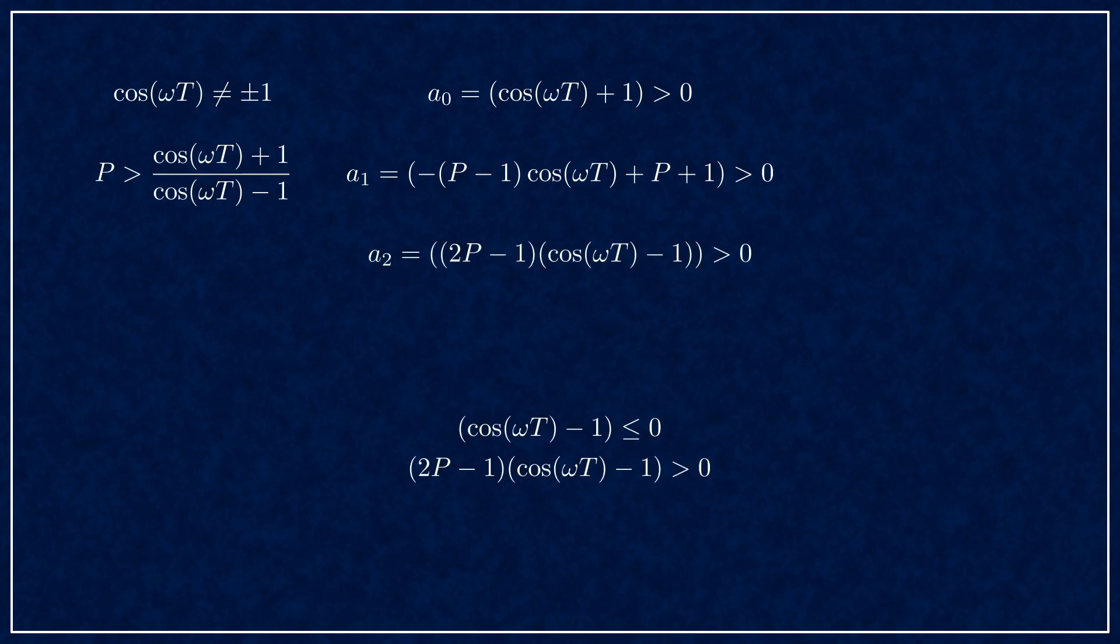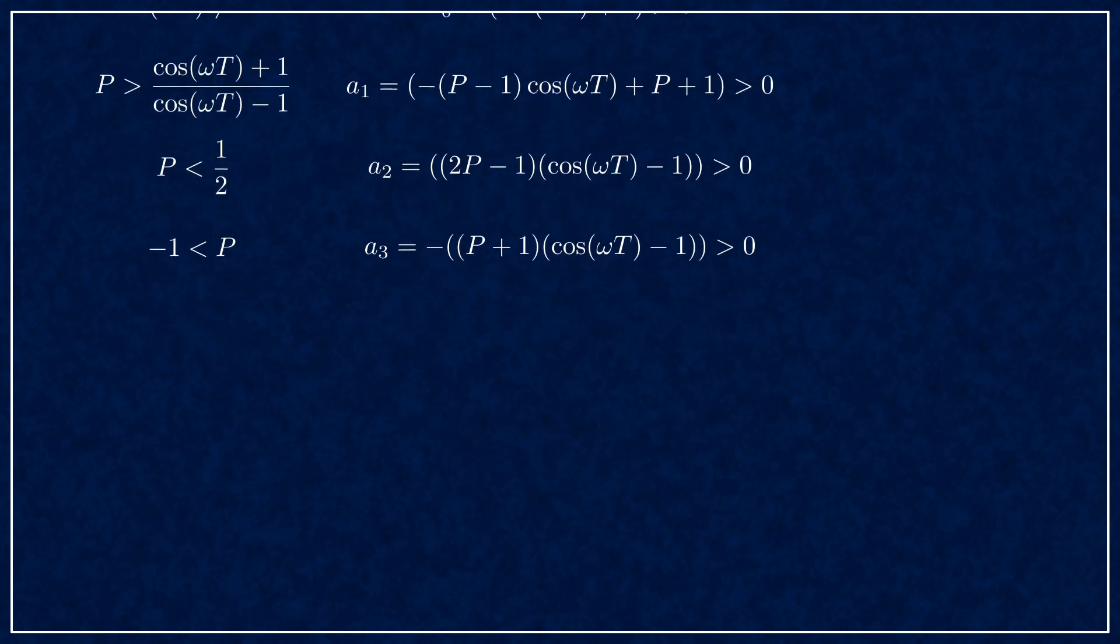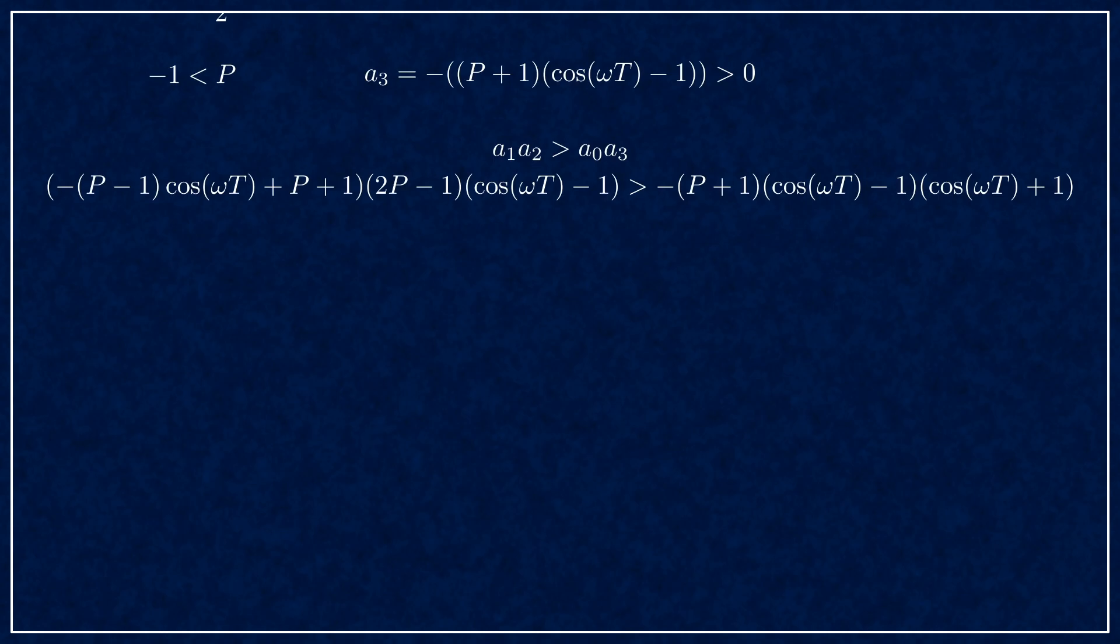The a2 term yields that p must be less than half. And the a3 term yields that p must be greater than minus 1. Next, for this complicated term, I'll show you the steps for the edge case with equality.